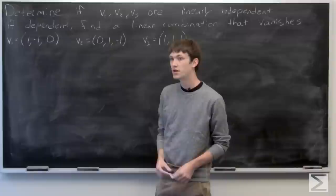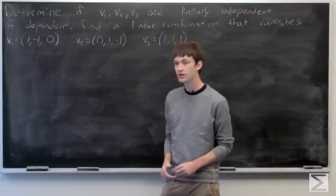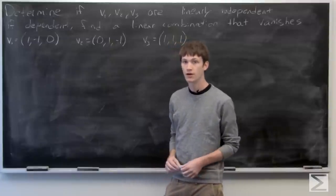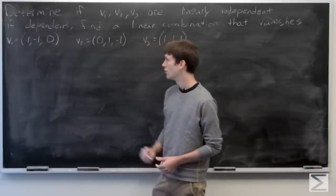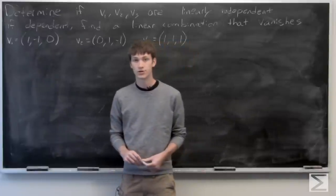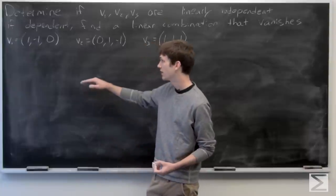In this problem, we're asked to determine if the vectors v1, v2, v3 are linearly independent. And if they're dependent, we want to find a linear combination that causes them to vanish.